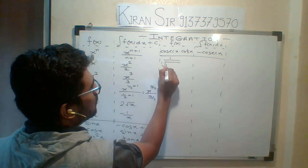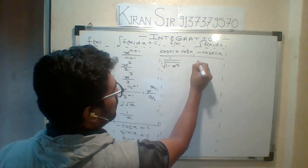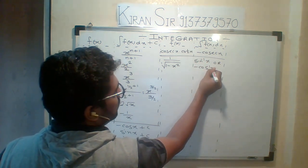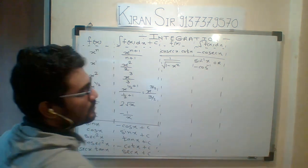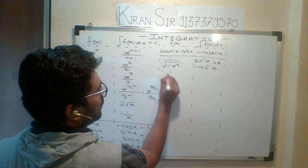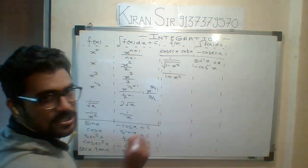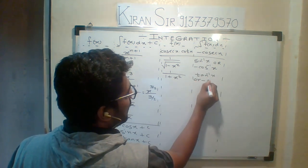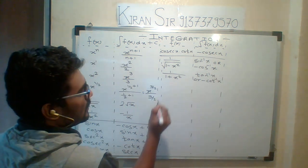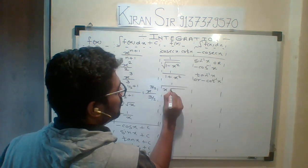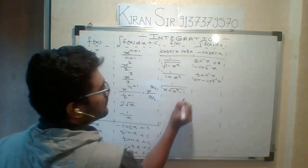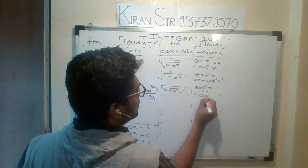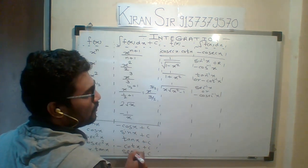Now going to inverse trig. Integration of 1 upon root of 1 minus x squared is either sin inverse x or minus cos inverse x — you can write any one. Similarly, integration of 1 upon 1 plus x squared is either tan inverse x or minus cot inverse x. The last inverse trig formula: 1 upon x times root of x squared minus 1 gives either sec inverse x or minus cosec inverse x.